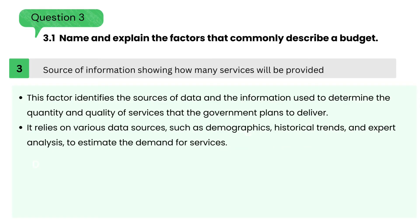3. Source of information showing how many services will be provided — this factor identifies the sources of data and information used to determine the quantity and quality of services that the government plans to deliver. It relies on various data sources, such as demographics, historical trends, and expert analysis, to estimate the demand for services.